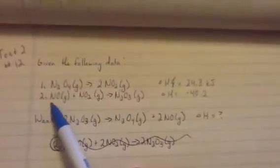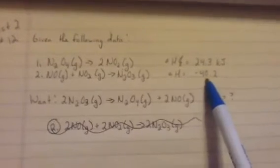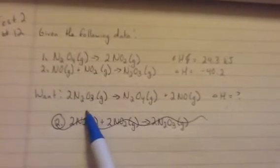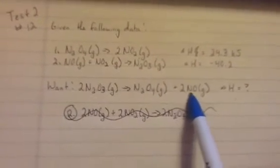The second thing is that we've got NO gas plus NO2 gas turns into N2O3 gas. Our total enthalpy is negative 40.2. We want the enthalpy of this reaction: 2N2O3 gas turns into N2O4 gas plus 2NO gas.